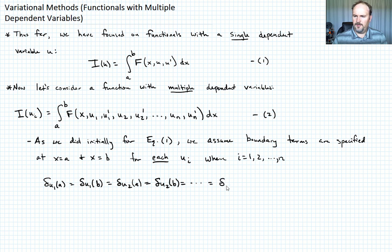And then up to delta un evaluated at a is equal to delta un evaluated at b, which is all equal to 0, right? That's what it means with the boundary terms are specified. Let's call that equation 3.